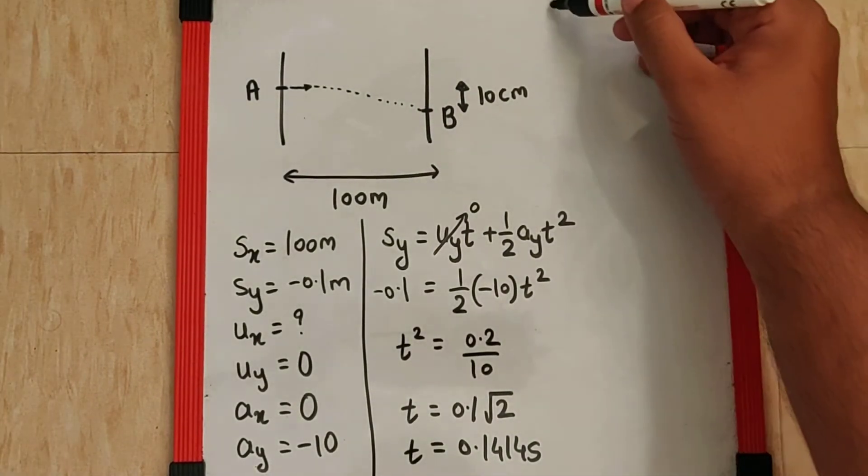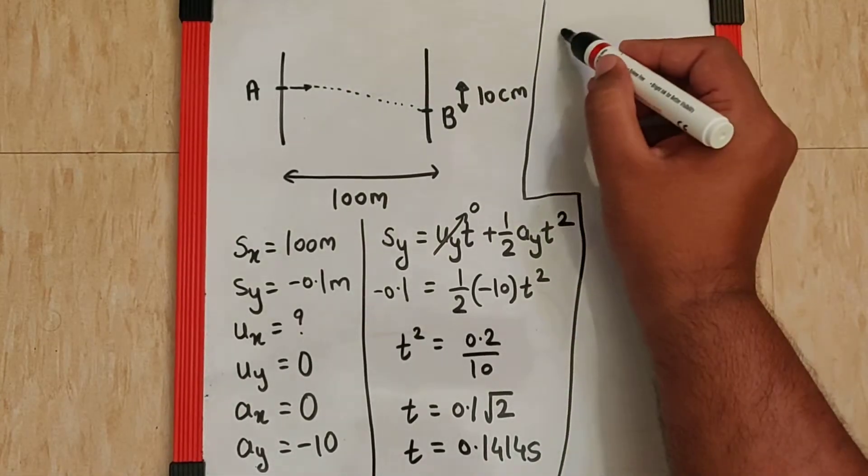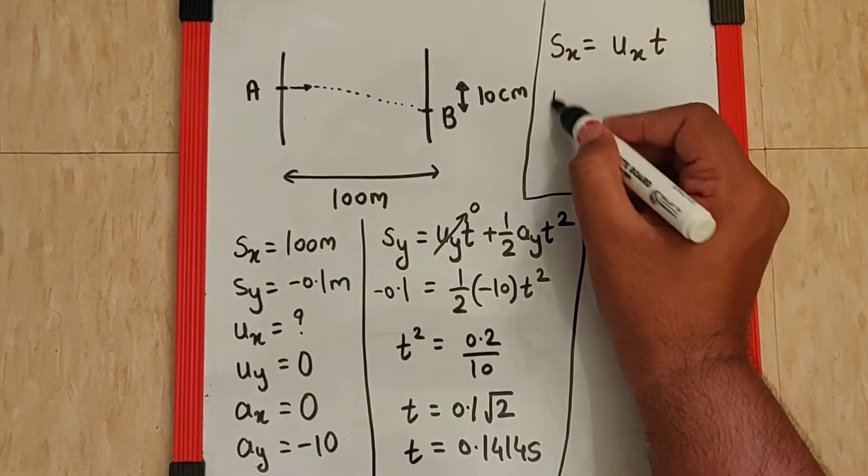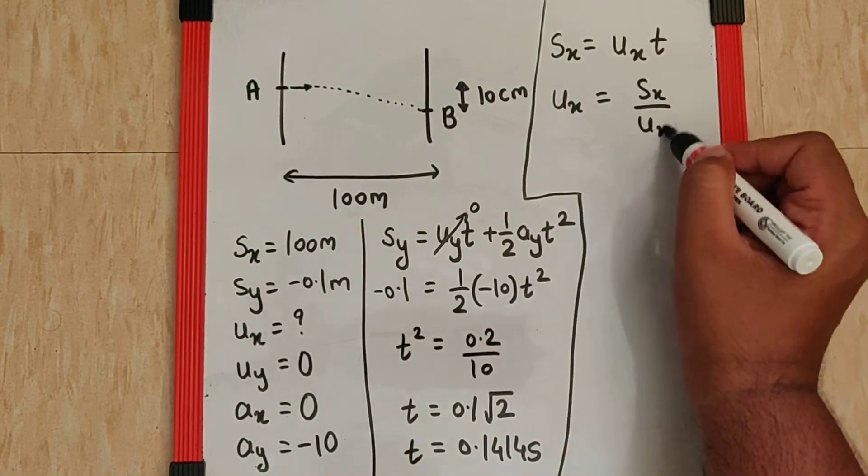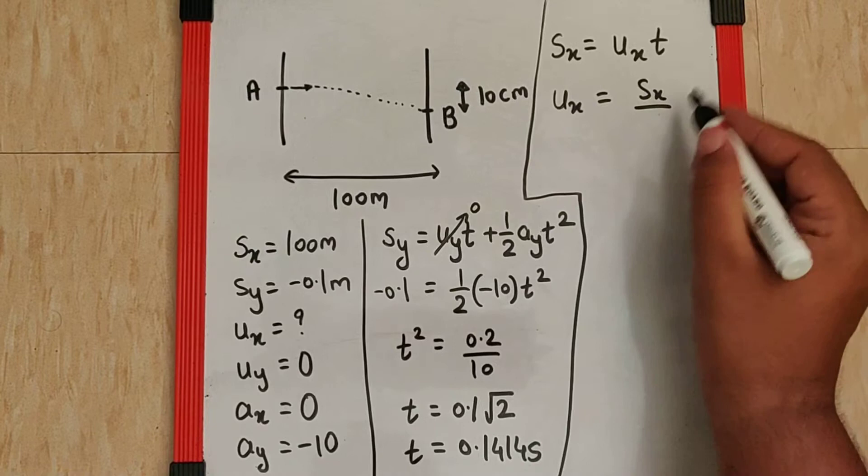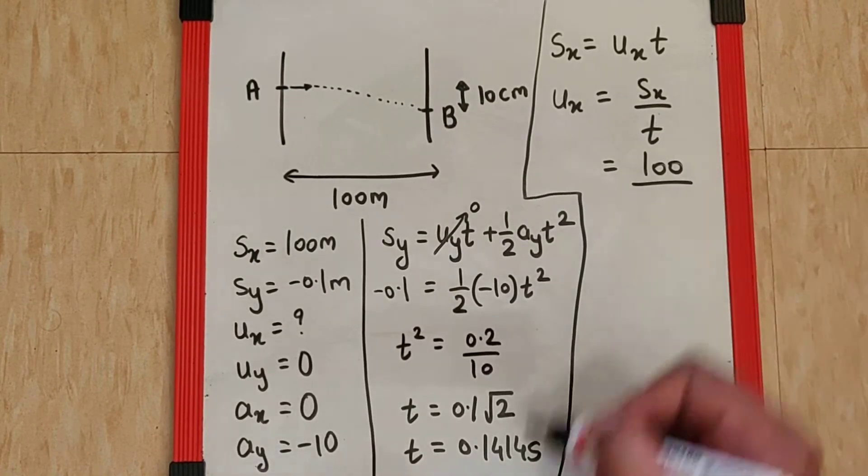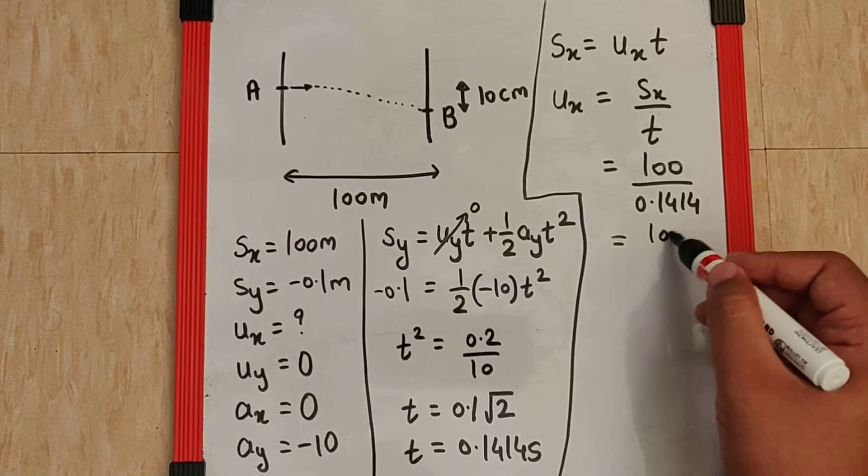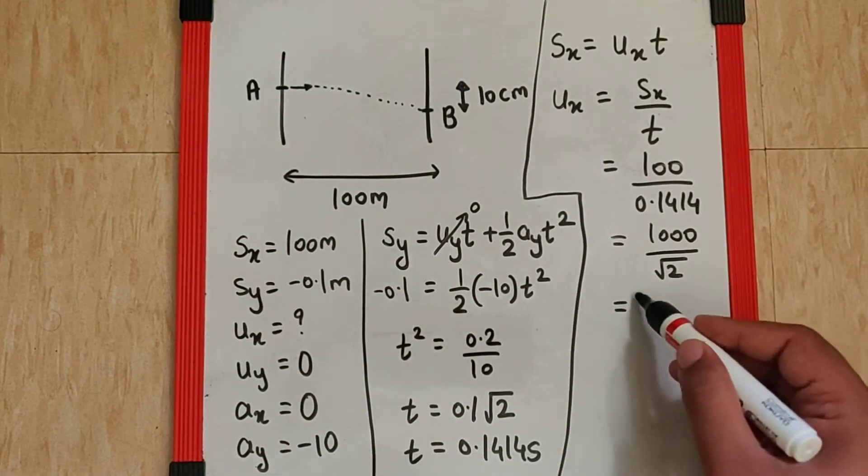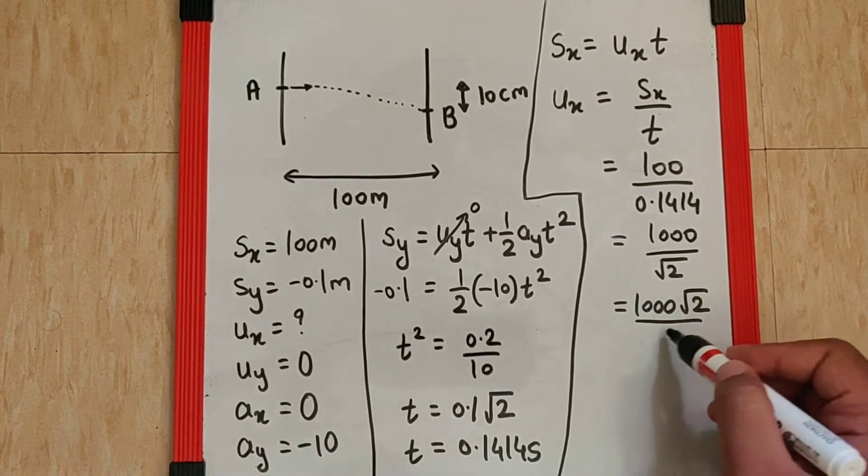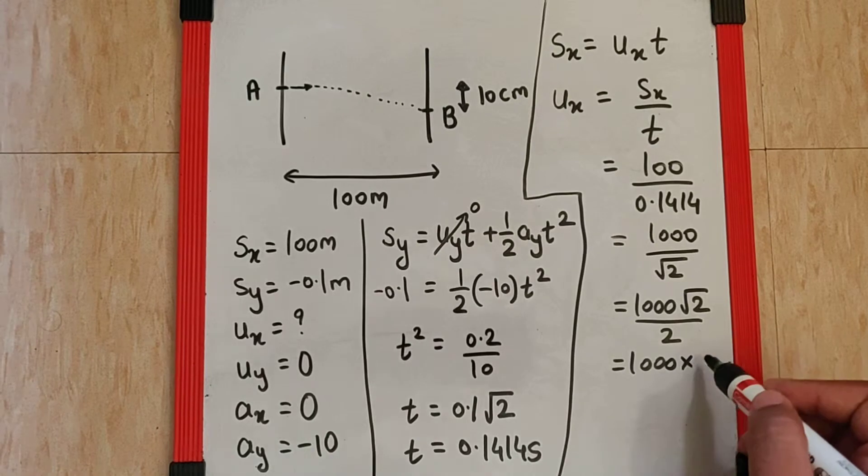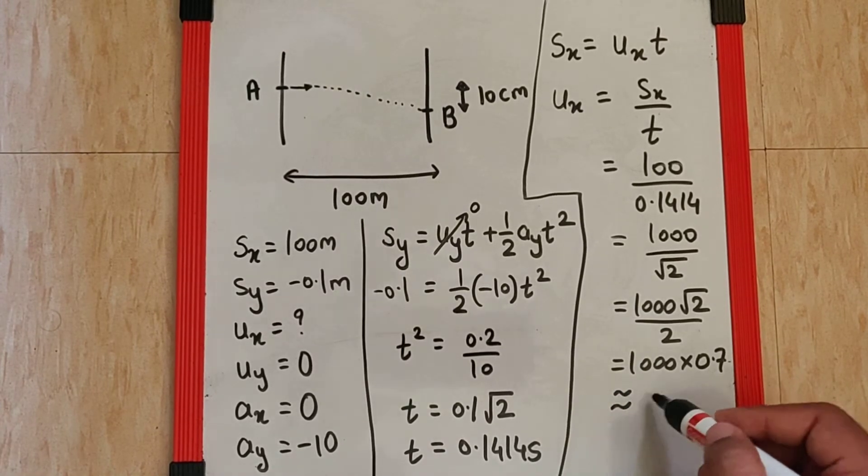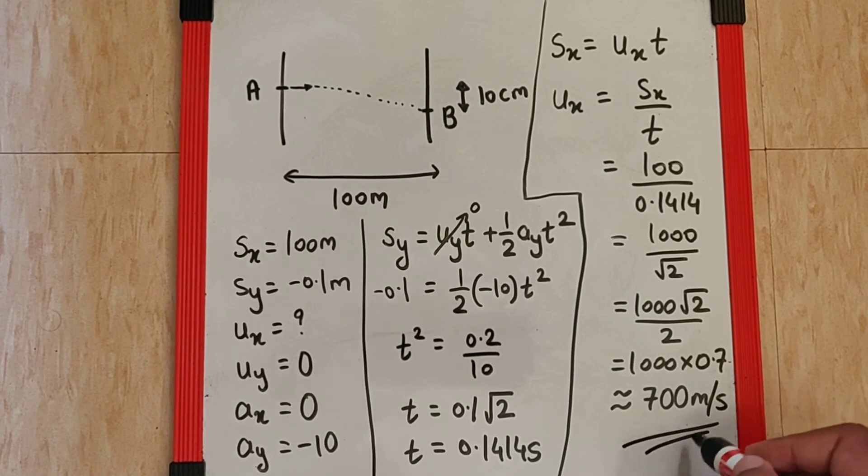Now we can use that time to find the Sx or Ux. Sx will be just UxT because Ax is again 0. So I can say Ux is going to be Sx by T. That makes it Sx as 100 and time as 0.1414. That is 0.1 root 2. That's equivalent to 1000 by root 2, which is 1000 root 2 by 2 which is 1000 into 1.414 by 2 is 0.707. So approximately this becomes 700 meter per second as your final answer.